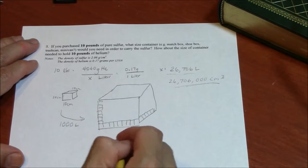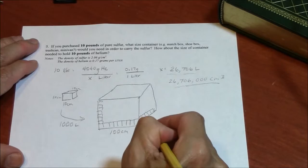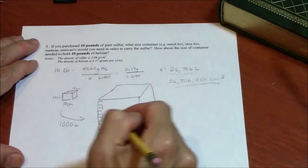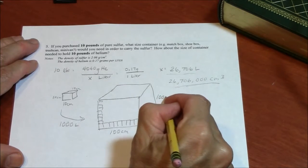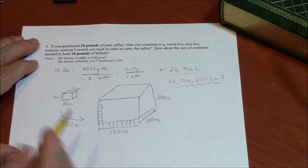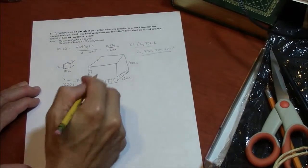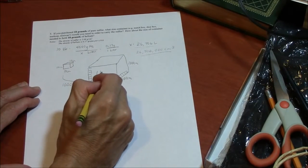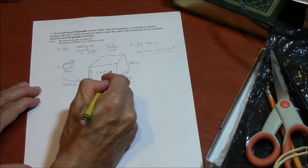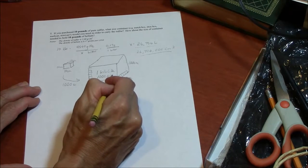So since a liter is 10 centimeters on a side, this would have to be a hundred centimeters on a side. And then we could fit a thousand liters in this box. So this big box is one kiloliter. One thousand liters. One kiloliter.